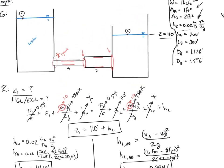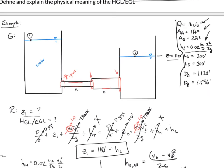The EGL always starts at the reservoir surface. There's an ignored entrance loss. Along the first narrow pipe we lose a lot of energy — 14.10 feet. At the expansion there's a 0.994-foot drop, then along the wider pipe B we lose only 3.74 feet, and at the exit another 0.994 feet.